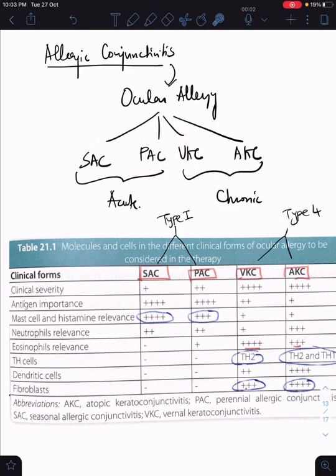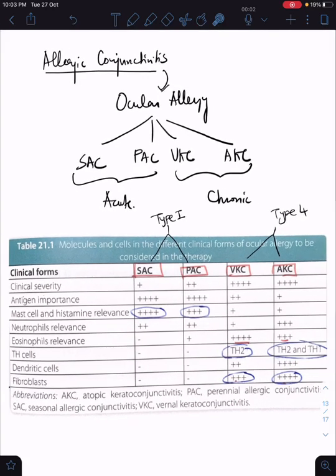The seasonal and perennial ones are what we commonly see in day-to-day practice, but VKC and AKC are more severe forms. They are chronic; they have exacerbations now and then. Very important table—please pause and take a screenshot of this table. This table shows you four things: SAC, PAC, VKC, AKC.